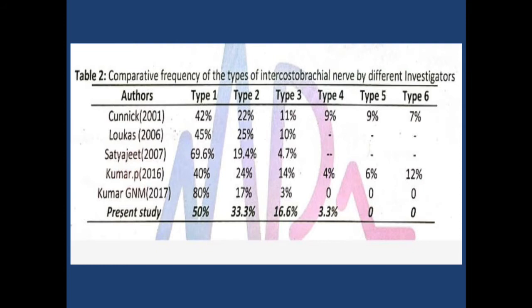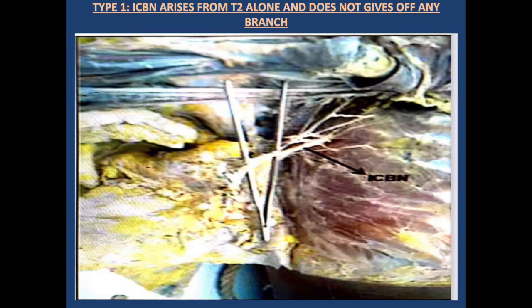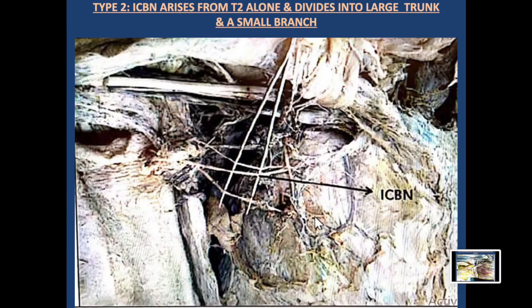Comparative frequency data from different investigators shows Type 1 occurs in 40–60% in most studies; in Kumar's study it is 80%, and in Satya Jeet's study 69%. Type 2 occurs in 20–30%, with the present study showing 33%. Other types are rare variations. A diagram illustrates the first and second type variations: the nerve emerging from the external intercostal and serratus anterior muscle, entering the axilla alone, then giving branches to the axillary skin.